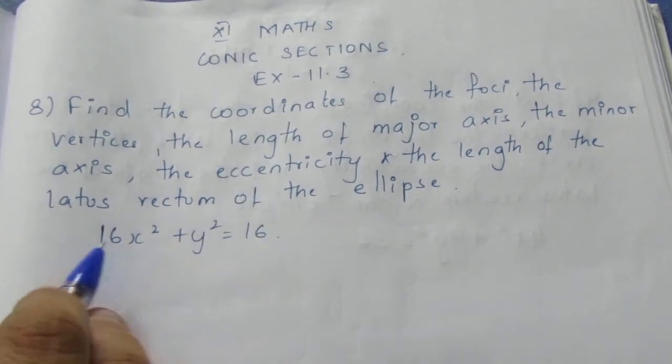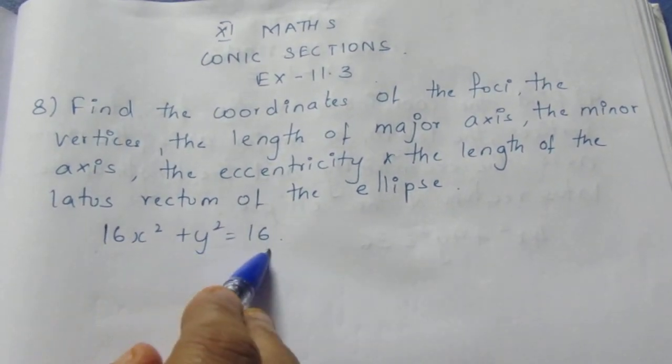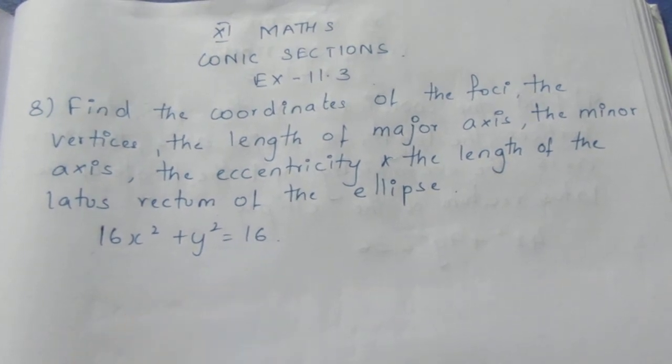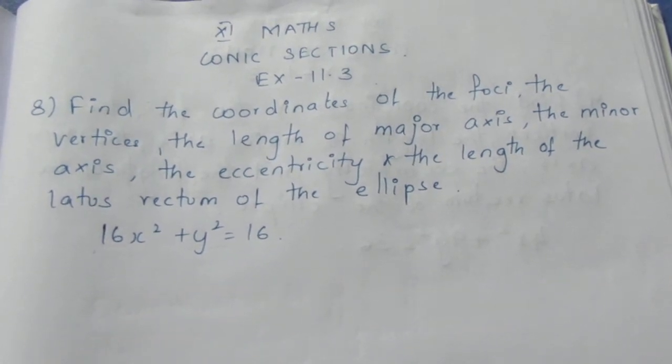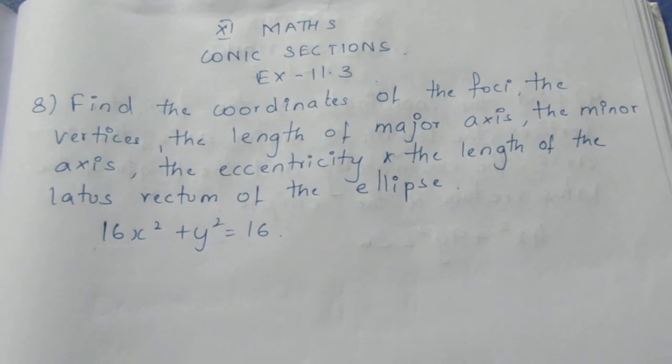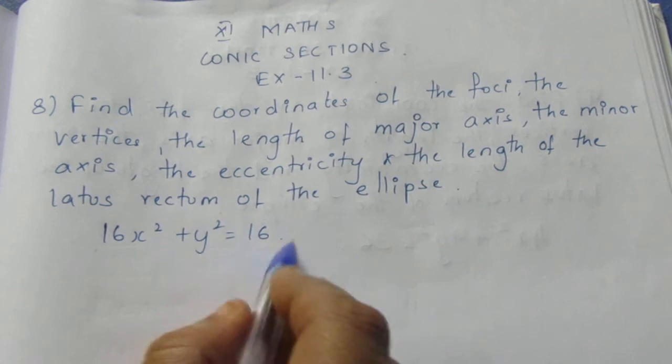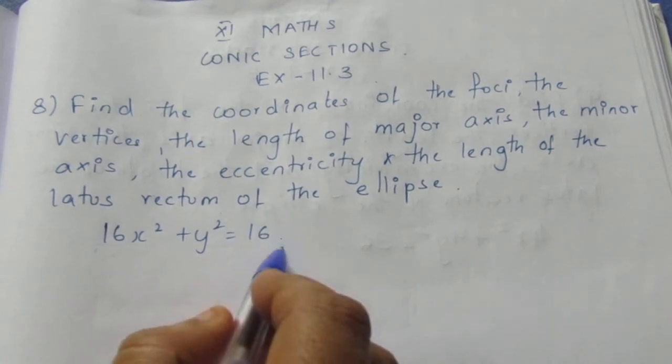Here the equation given is 16x² + y² = 16. We know the general form of equation of ellipse will be x²/a² + y²/b² = 1. So remember that the equation should always have a constant term equal to 1.